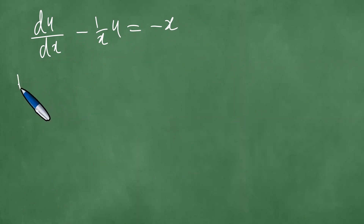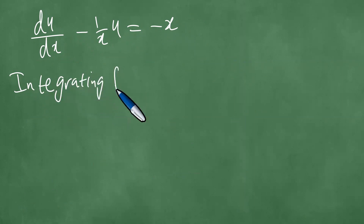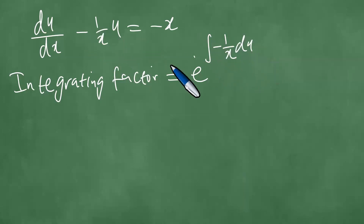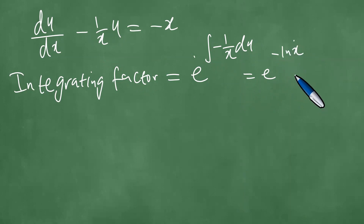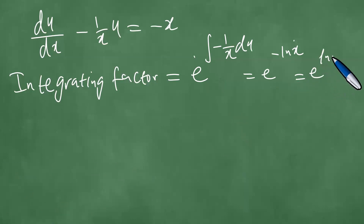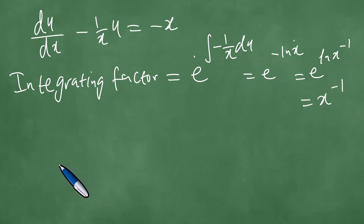We find the integrating factor, which is e to the power of the integral of the coefficient of u, which is minus 1 over x. The integral of minus 1 over x is minus the natural log of x, so the integrating factor is e to the power of ln(x to the minus 1), which equals x to the minus 1.